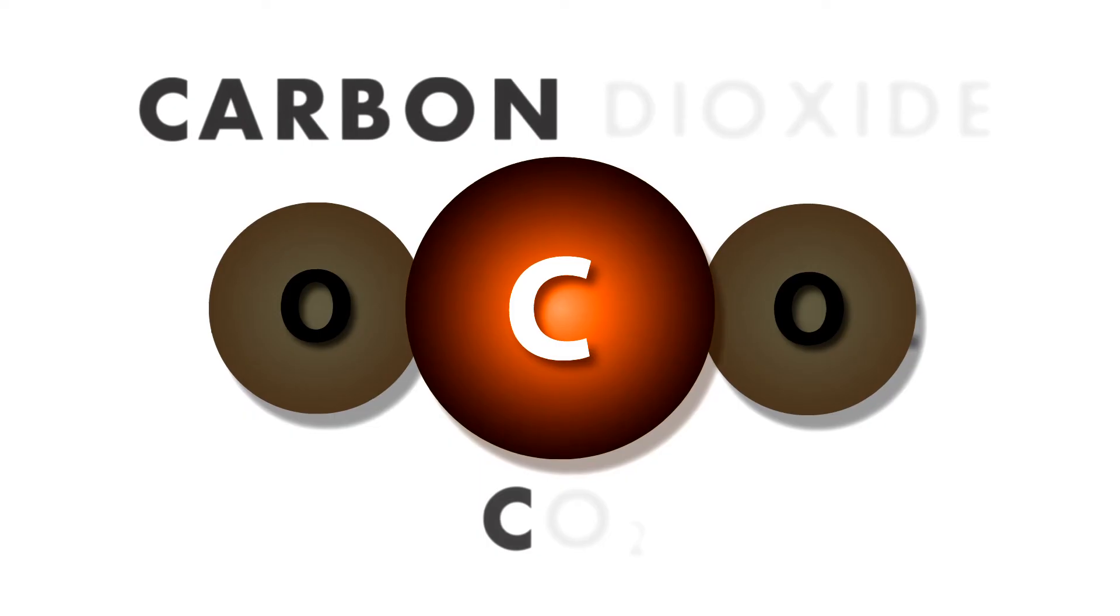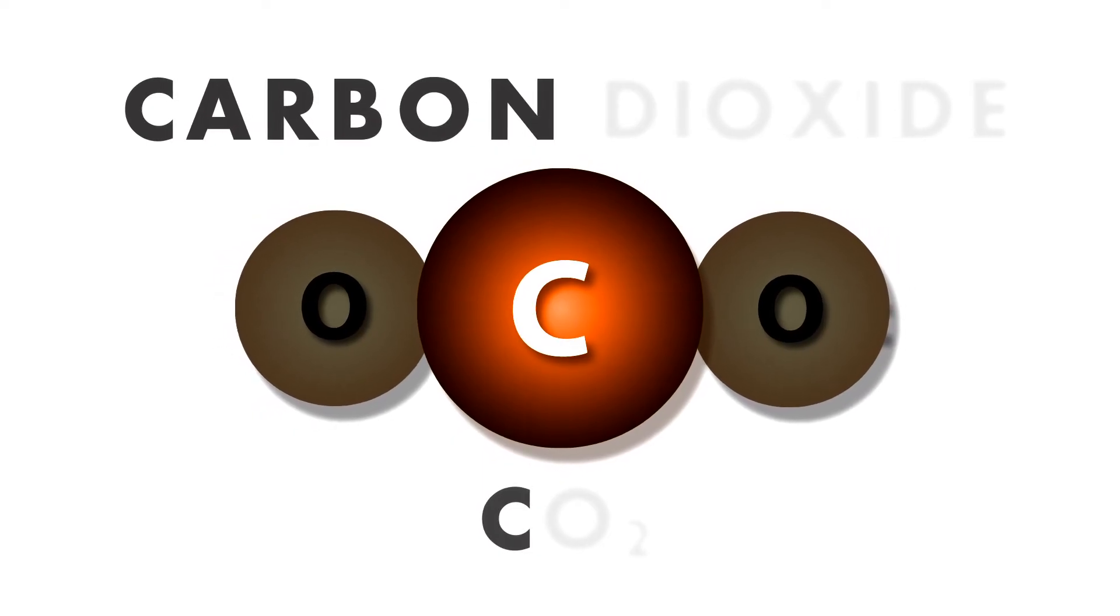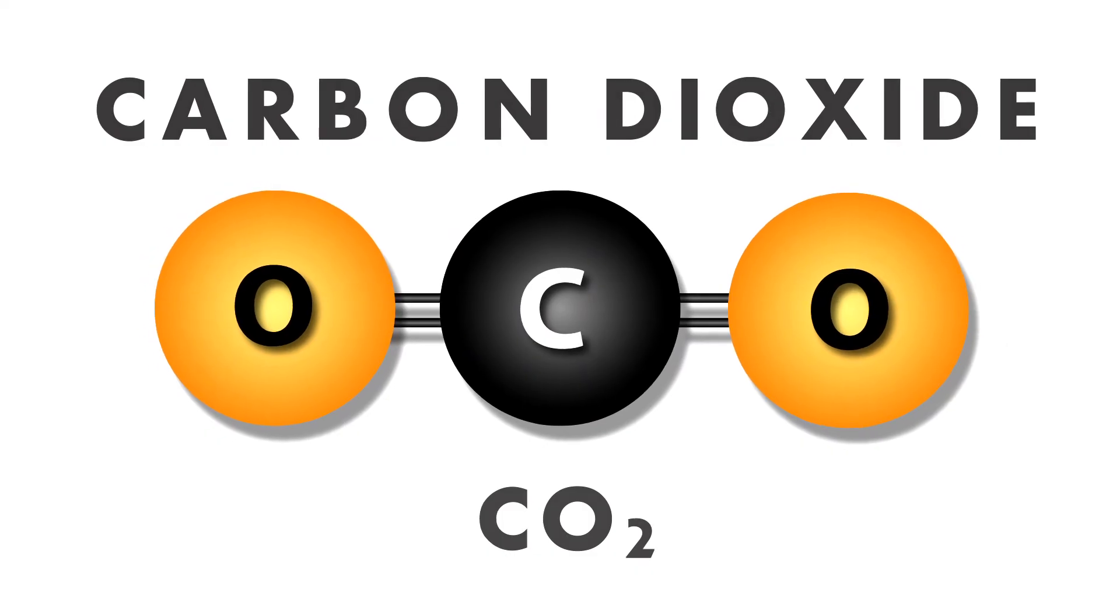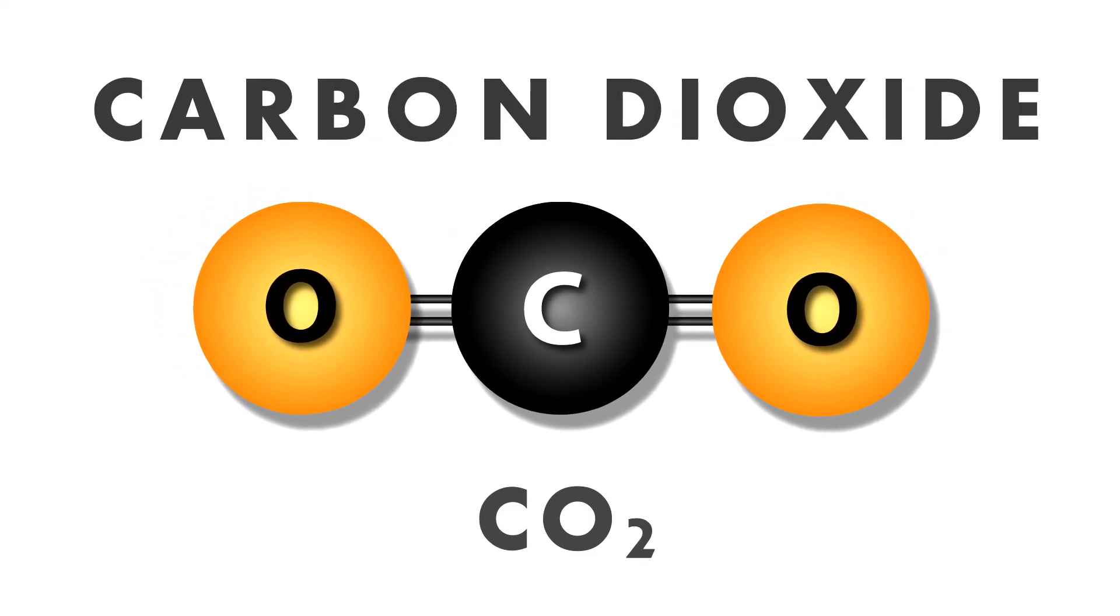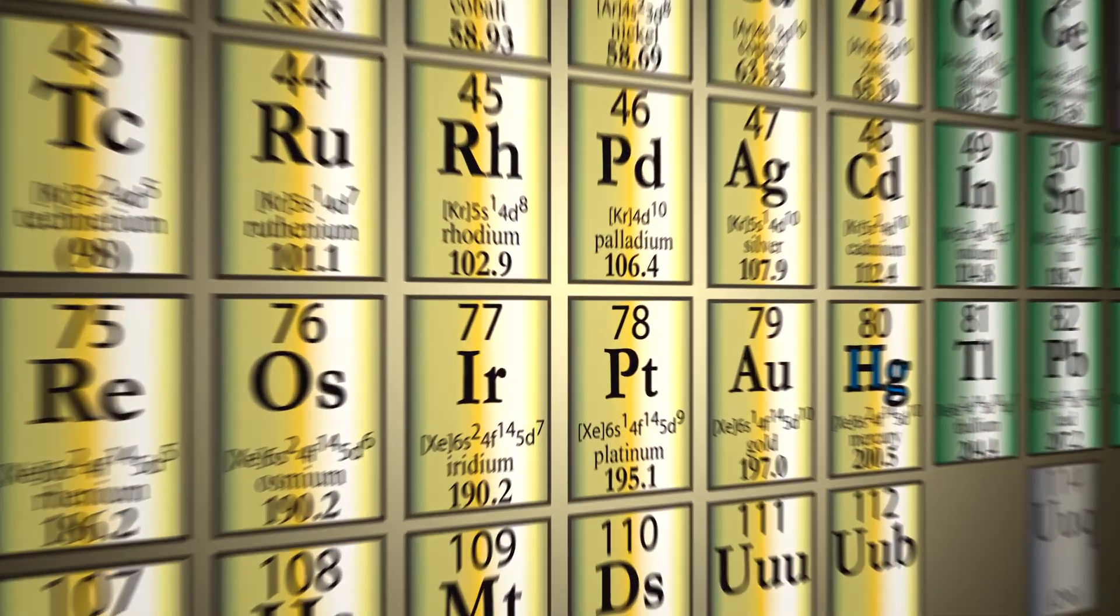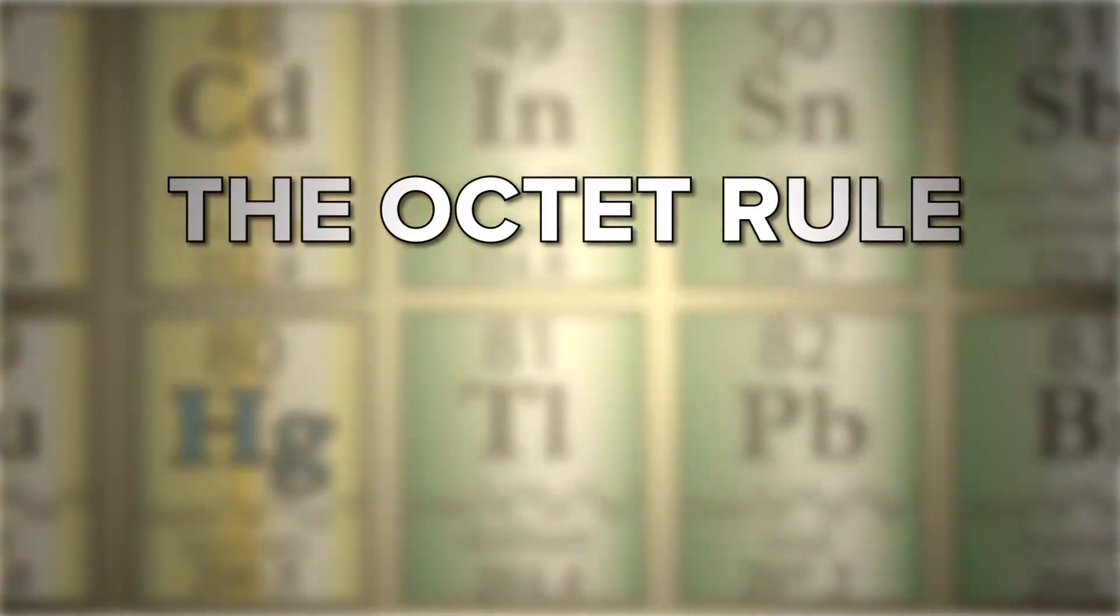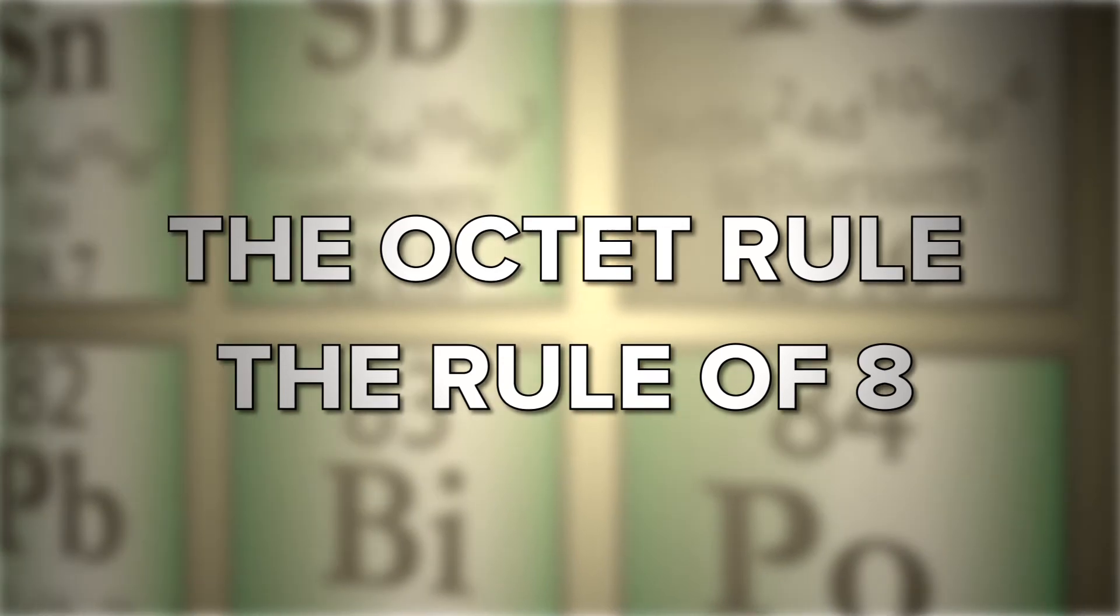One atom of carbon, the C part of CO2, attached or bonded to two atoms of oxygen, the O2 part of CO2, in a linear structure. Great opportunity here to explain one of the fundamental rules in organic chemistry, the octet rule, or rule of eight.